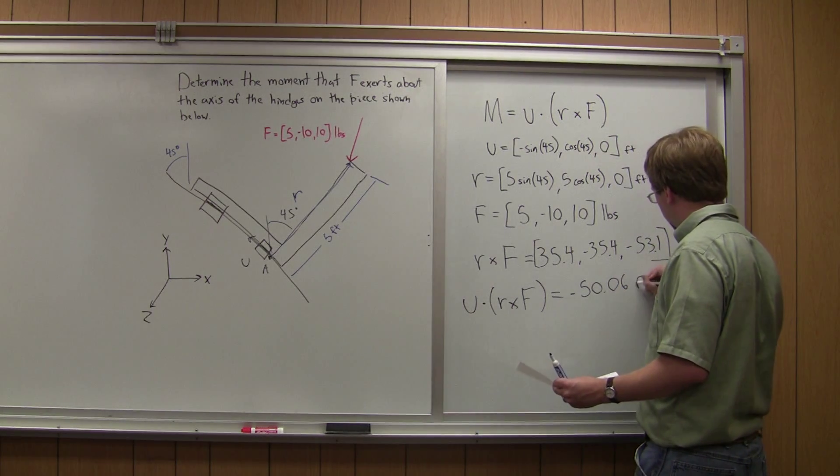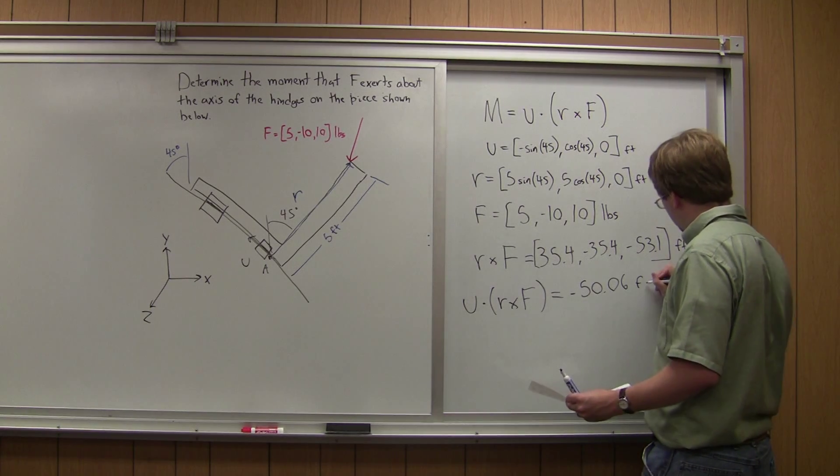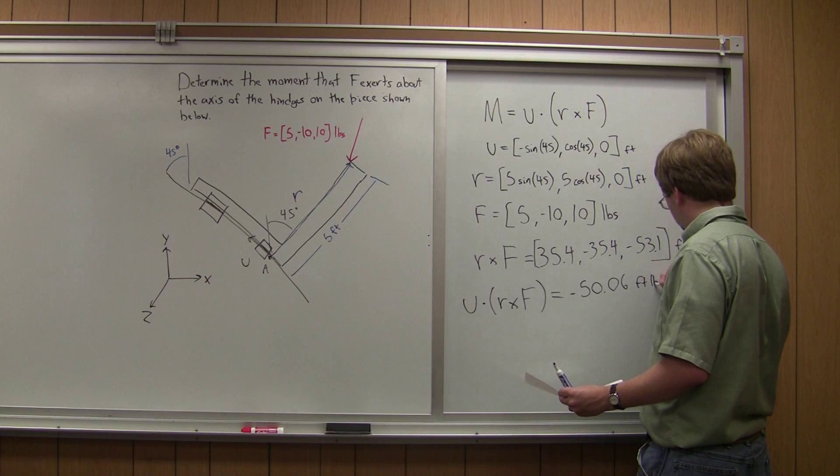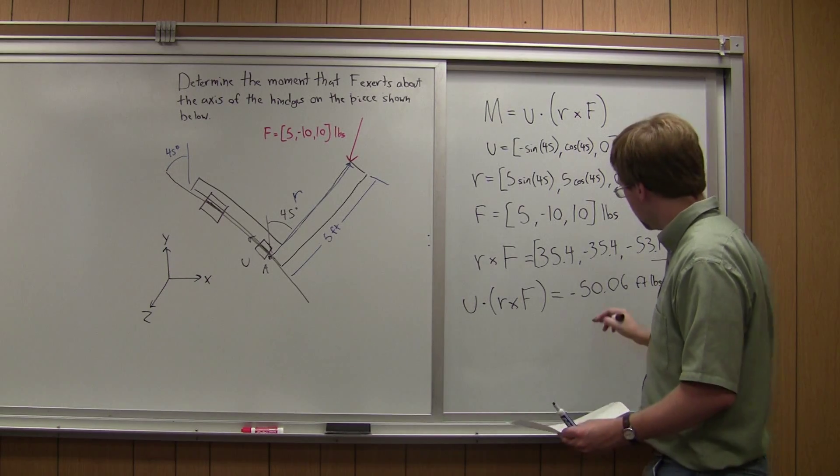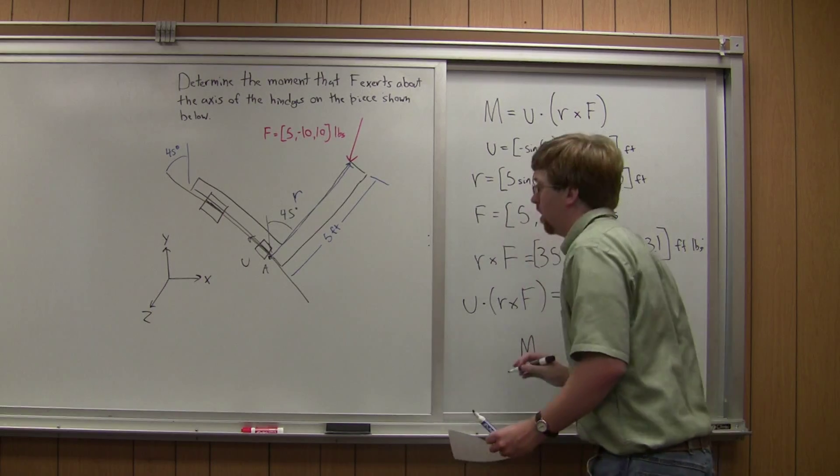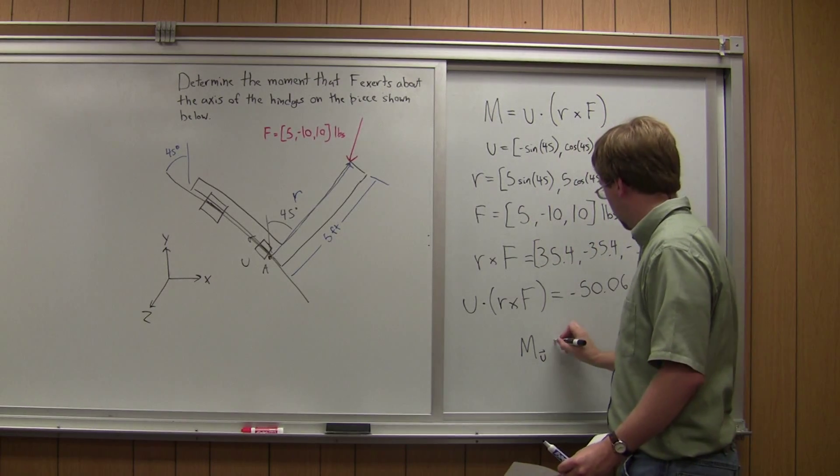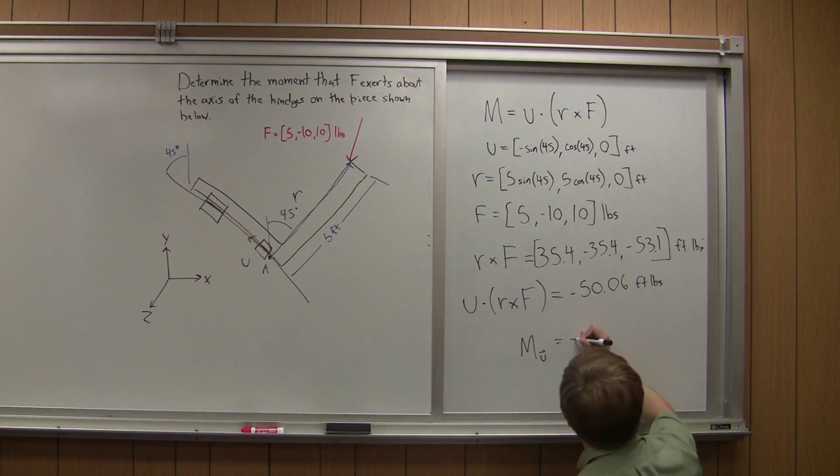and the units, because the units of this up here is foot-pounds, the unit here is going to be foot-pounds as well. So M about axis U is going to be this negative 50.06 foot-pounds.